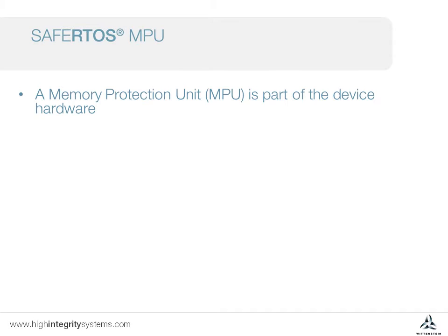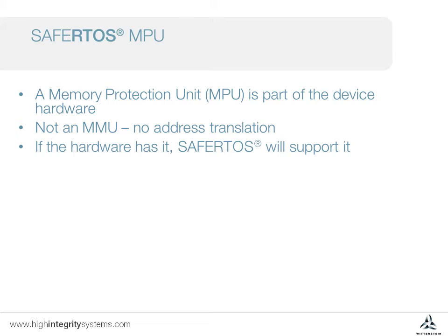A Memory Protection Unit is an additional piece of hardware functionality. Many modern micros, such as ARM Cortex-M3 and M4 based devices, or the Renesas RX series, offer this. This is not a full memory management unit, so there is no address translation, but it transparently checks every memory access against a set of permissions. If the device has an MPU, SafeRTOS will support it. For these videos we'll talk about the SafeRTOS implementation for ARM Cortex-M based devices, but most of this is common with other platforms.